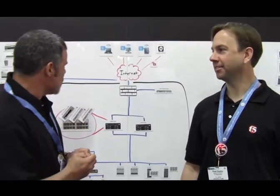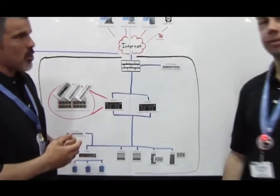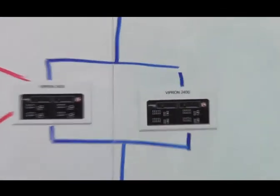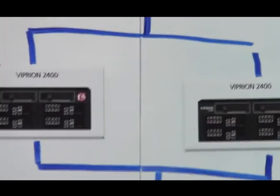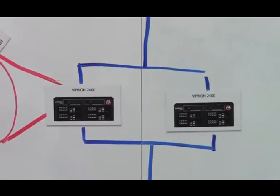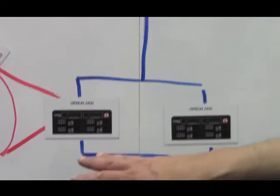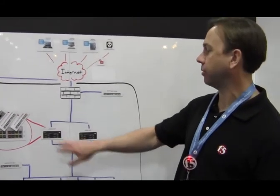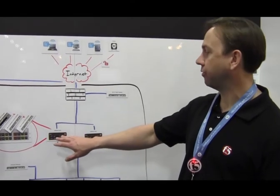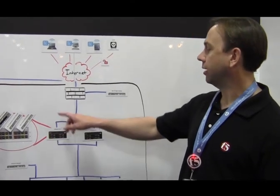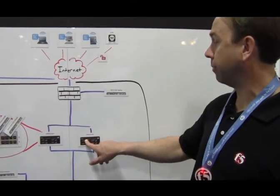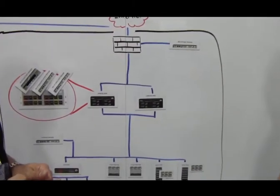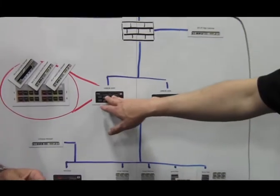So tell us a little bit about this Viprion 2400. The Viprion 2400 is our mid-range chassis platform we just announced. What it allows you to do is, at a much lower entry price point than the Viprion high-end chassis that we've had for a number of years, it allows you to pay as you go by putting actual real hardware in there instead of paying for a license.